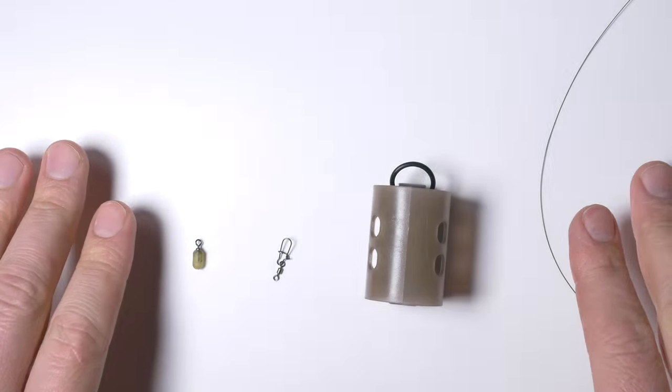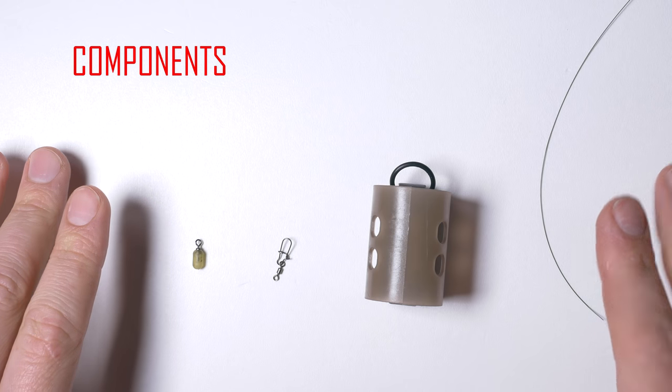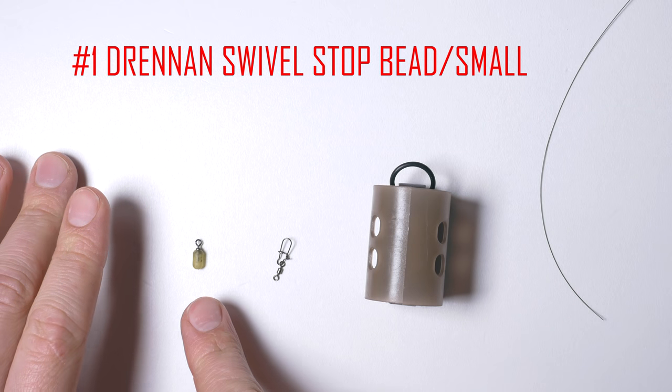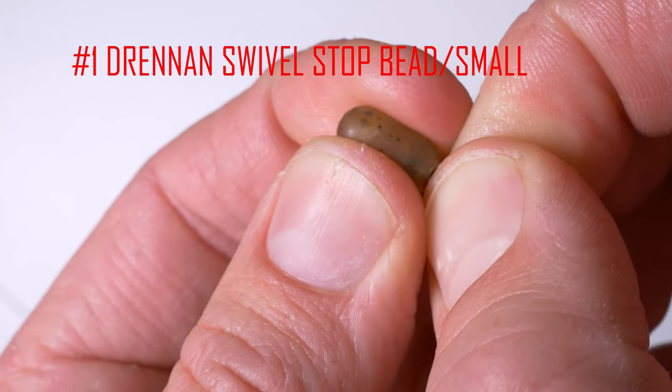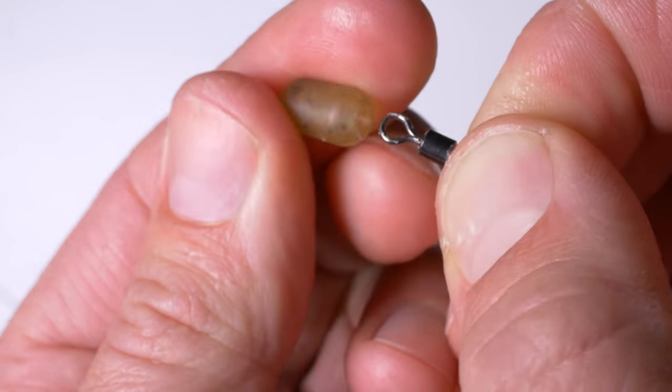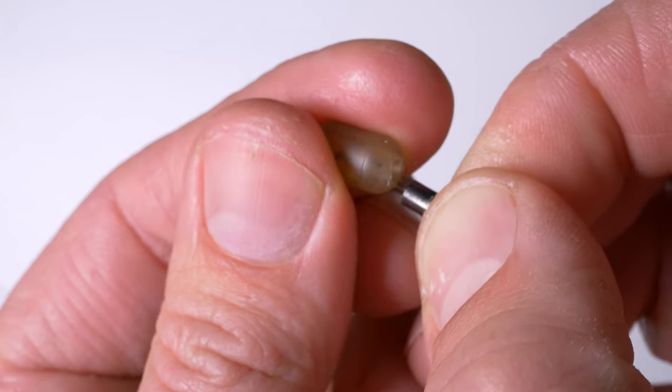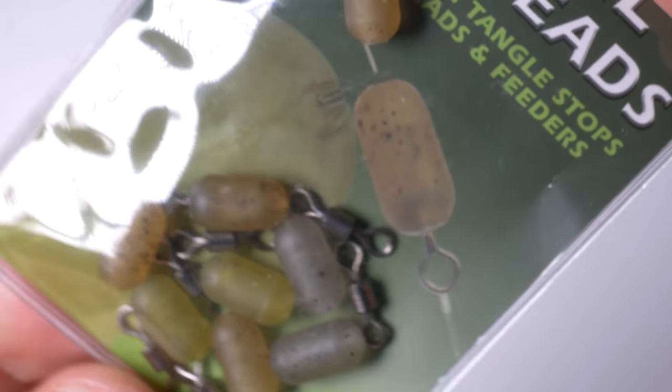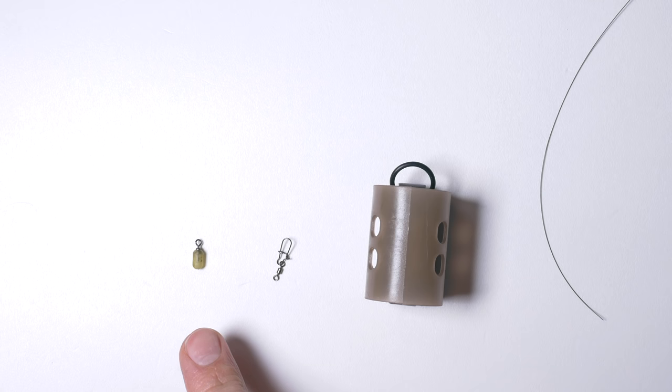To tie this feeder rig I will use these components: Drennan swivel stop beads in size small. These are little clever hard rubber beads which take inside a swivel. They sell in sets of correct size swivels and beads.